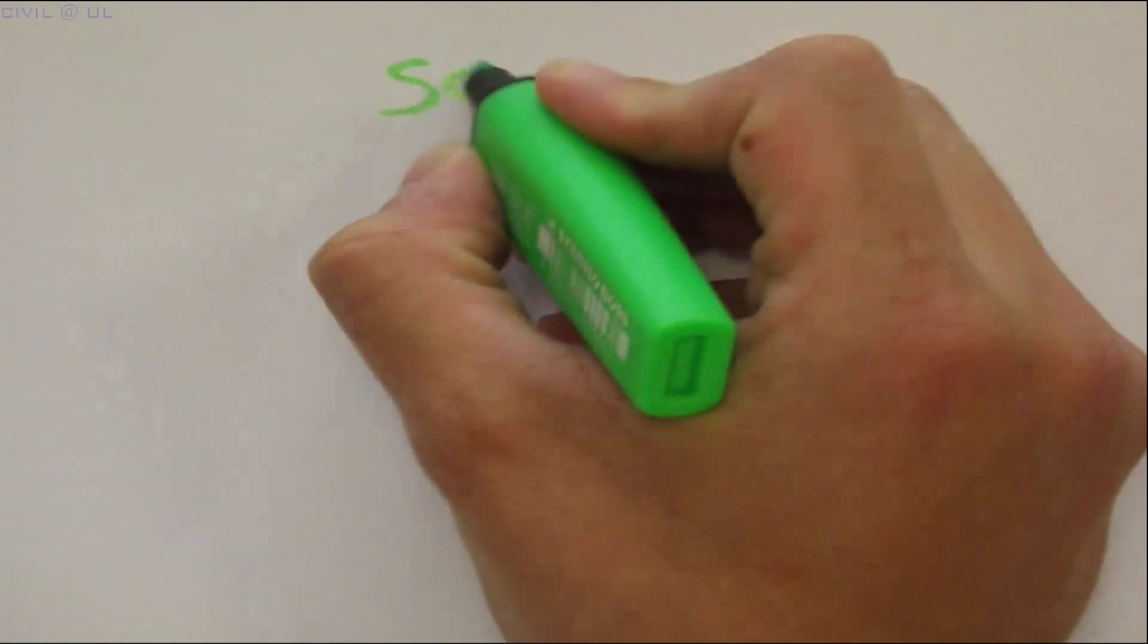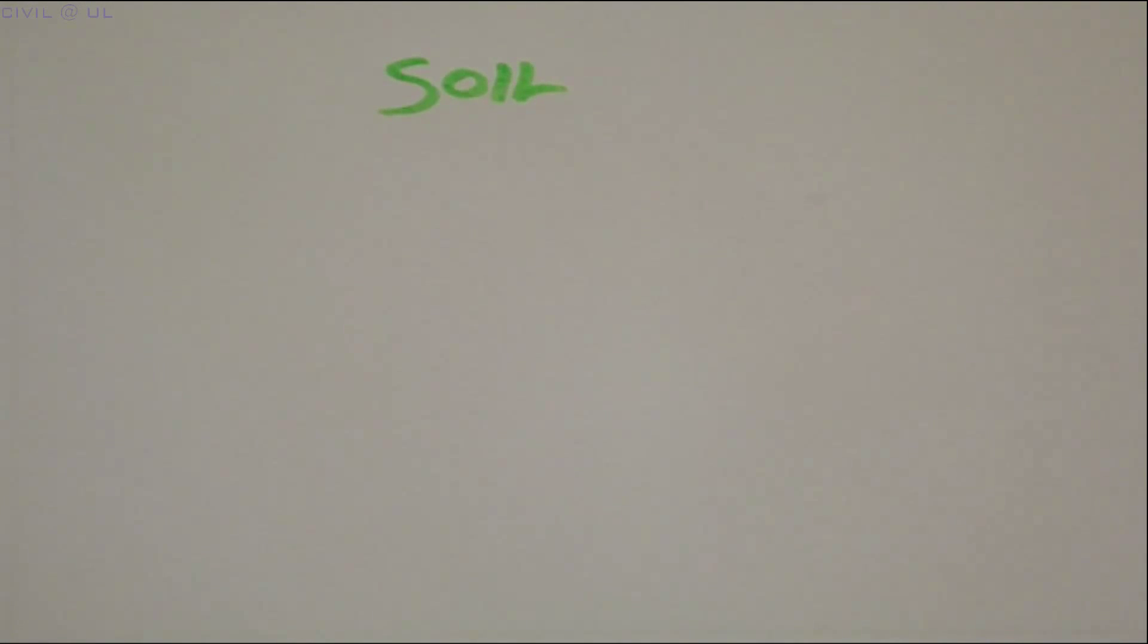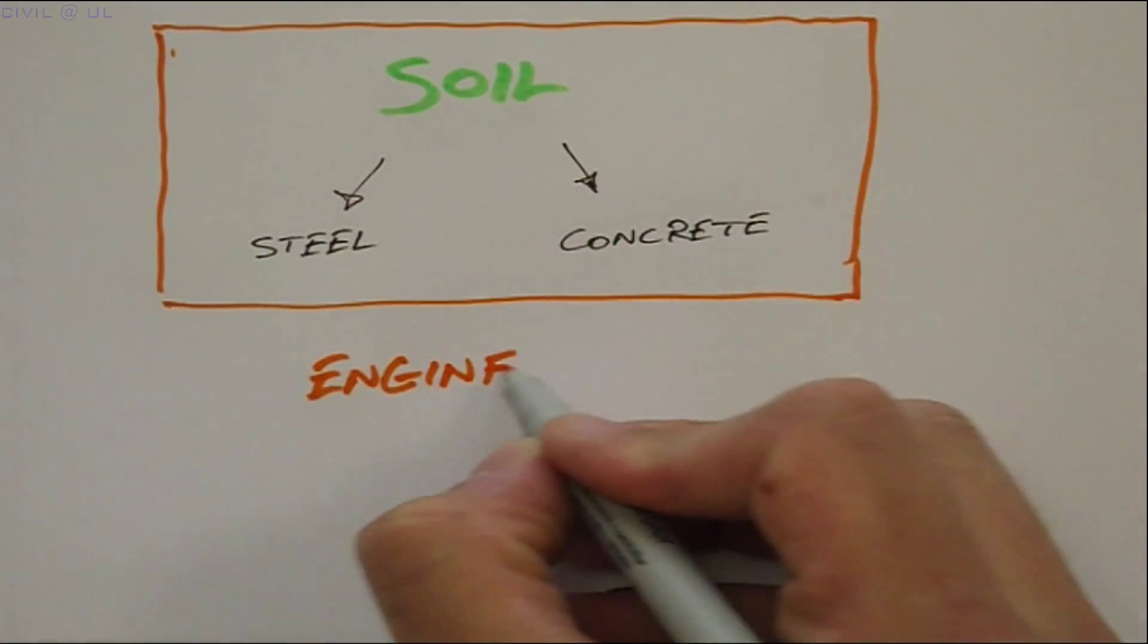In this video, we'll explain why soil differs from other engineering materials such as steel and concrete, and define some of its key properties that will help us characterize it as an engineering material.